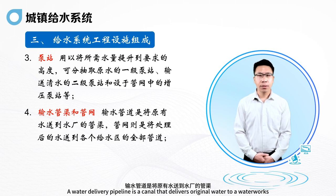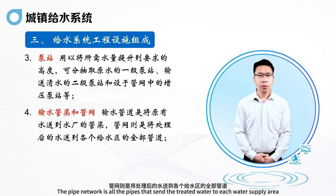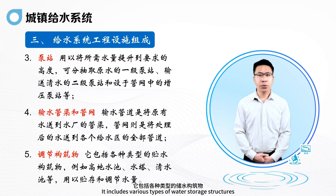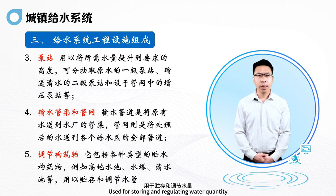A water delivery pipeline is a canal that delivers raw water to a waterworks. The pipe network consists of all the pipes that send treated water to each water supply area. Fifth, regulating structures, including various types of water storage structures such as highland pools, water towers, and clear water pools, used for storing and regulating water quantity.